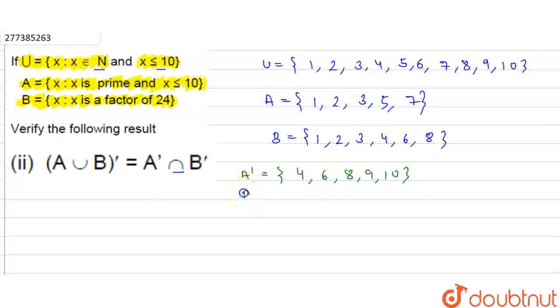Similarly, we need to find set B'. B' will be elements not present in B. So 1, 2, 3, 4 are there, now 5 is not present, after 6, 7 is not present, 8, 9, and 10 are not present. So this is our set B'.